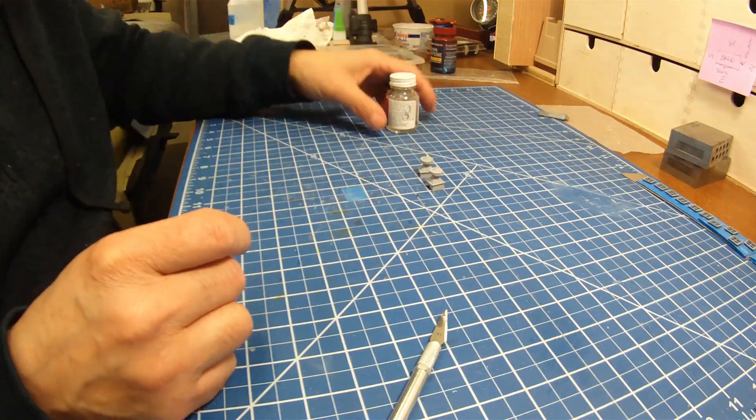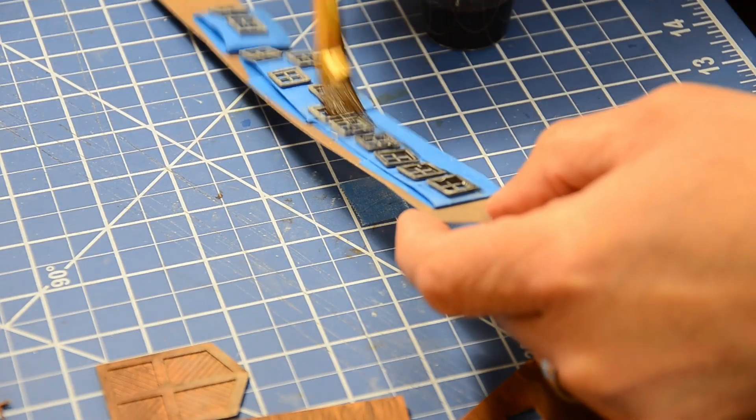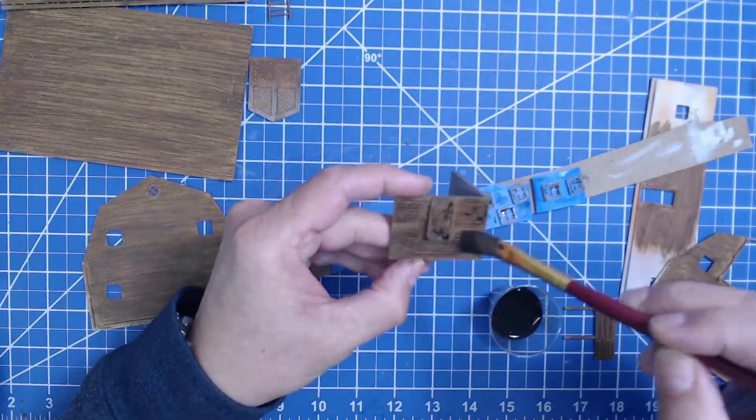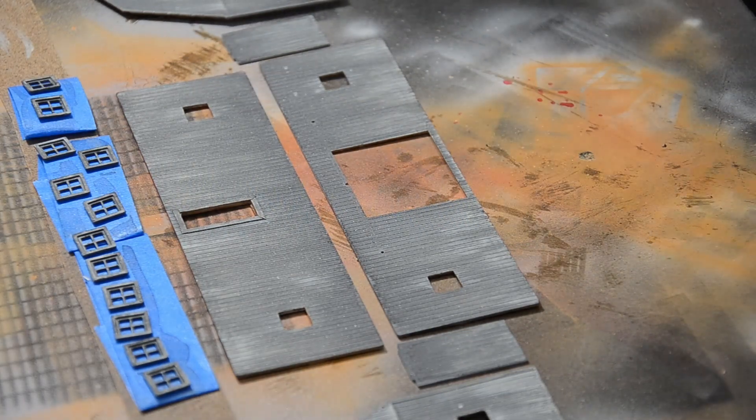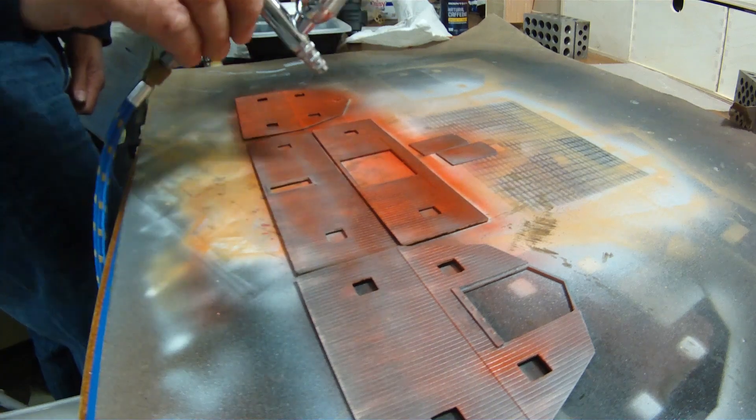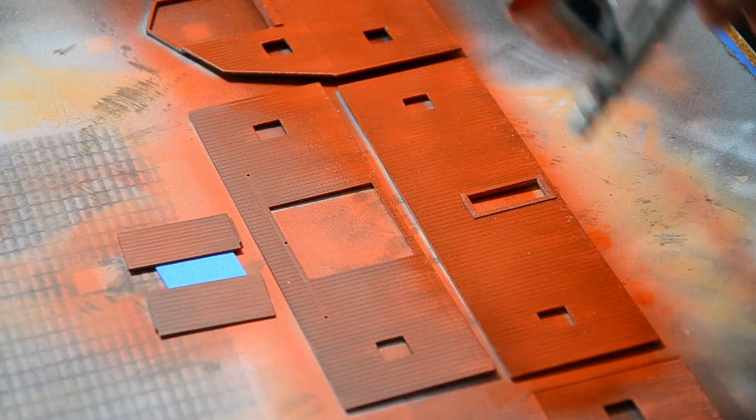Assembling the roof fence was next. All the walls, windows, and interior parts were given a wash of diluted black acrylic paint. The exterior walls were hit with hairspray in preparation for chipping. Next, they were painted with Vallejo Fire Red. It took several coats to get sufficient coverage.